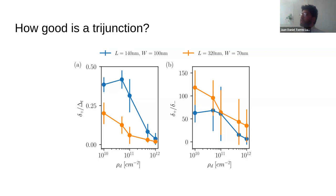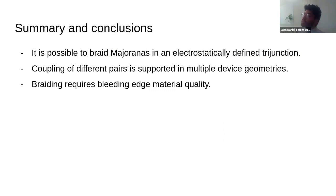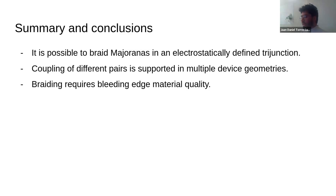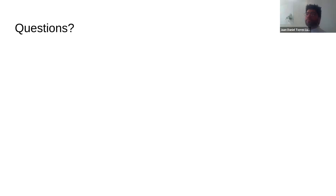To summarize and conclude: first, we found that it is possible to braid Majoranas in an electrostatically defined trijunction — the gap remains finite along the voltage-space path where braiding is performed. Second, it is possible to couple different pairs of Majoranas for a range of device geometries, with an interplay between different length scales. Third, braiding requires bleeding-edge material quality — very clean materials are necessary. Thank you all for listening, and I'll be glad to answer any questions.